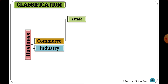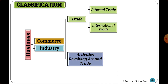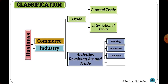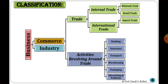Commerce is again classified into trade and activities revolving around trade. Trade is classified as internal trade and international trade. Activities revolving around trade include banking, insurance, transport, warehousing, packaging, advertising and publicity. Internal trade is classified into wholesale trade and retail trade. International trade is classified as import trade, export trade, and re-export trade. These are the branches of commerce.